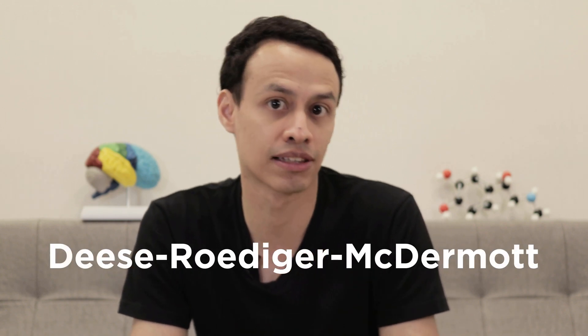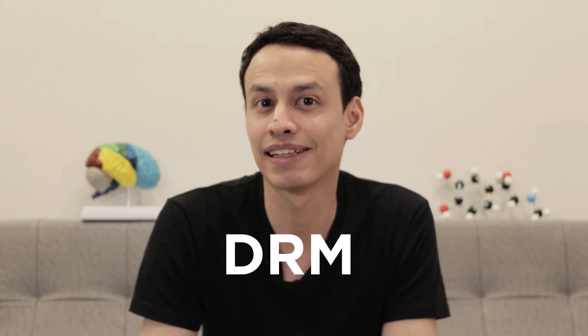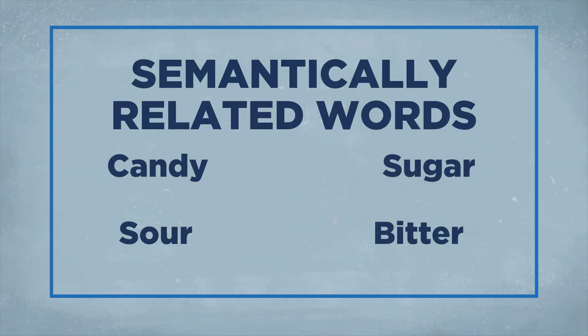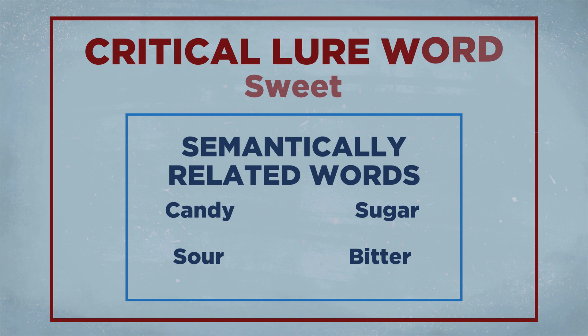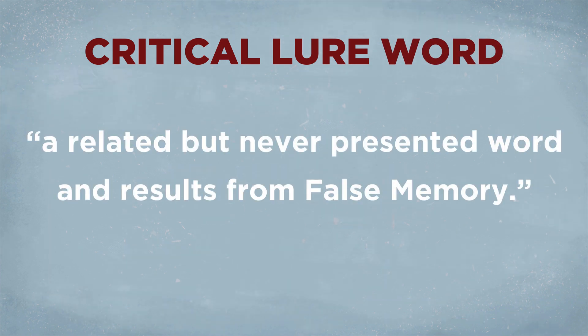What you just took was a simple cognitive test used in false memory research called the Deese-Roediger-McDermott task, or DRM. In this exercise, you're presented with a list of semantically related words that are under a specific critical lure word. A critical lure is a related but never presented word, and results from false memory.